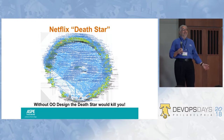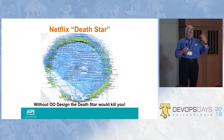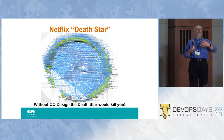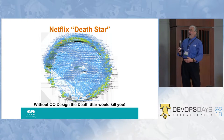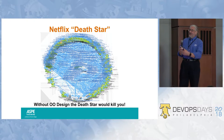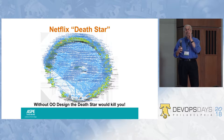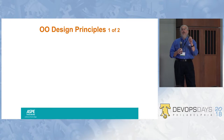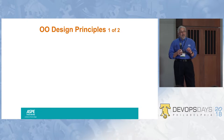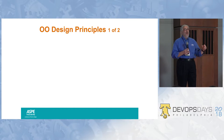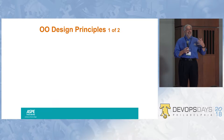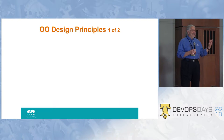That results in something like Netflix — thousands and thousands of services all interacting with each other, which gives us kind of a crazy picture. OO Design is actually what makes it reasonable, makes it workable, and indeed the OO Design principles are what make microservices not just workable, but actually a good idea.